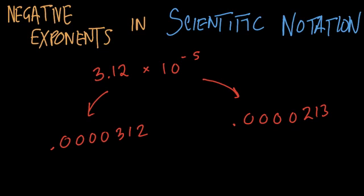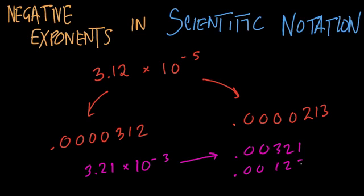Her specific question was 3.21 times 10 to the negative 3rd. Does that equal .000321, or does it equal .000123? Notice here there's a reversing, because we know that negative exponents reverse the process in scientific notation.